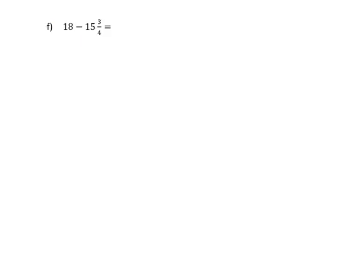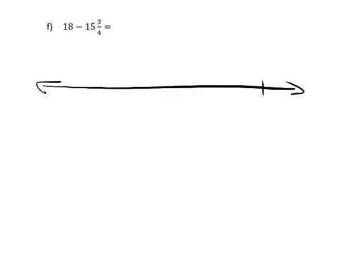Now this problem is subtraction. I'm going to give you two options: first the Engage New York method, and then another method used in other countries, particularly Australia and England. So for the Engage New York method, I'm going to draw my number line and start at 18.